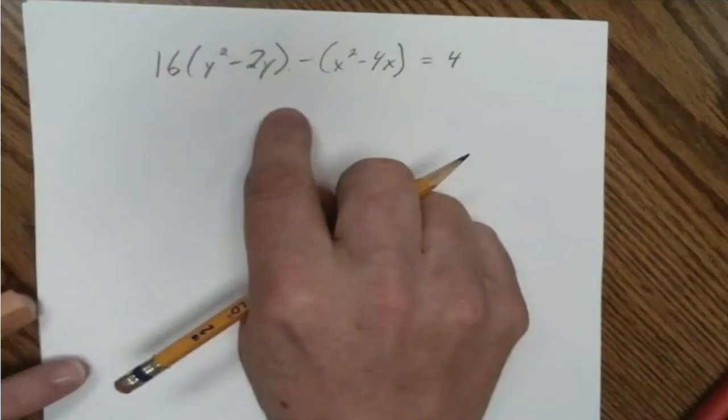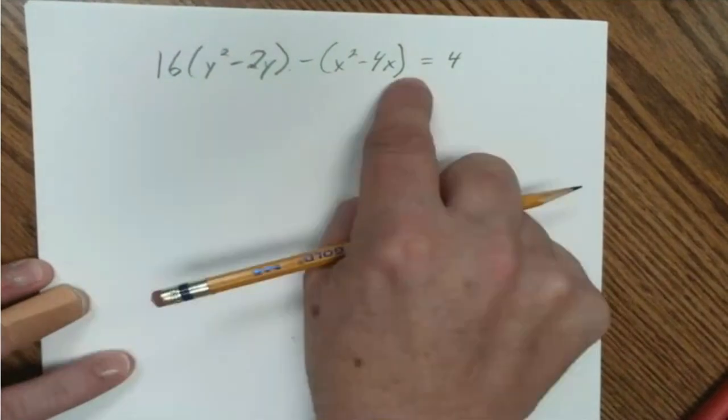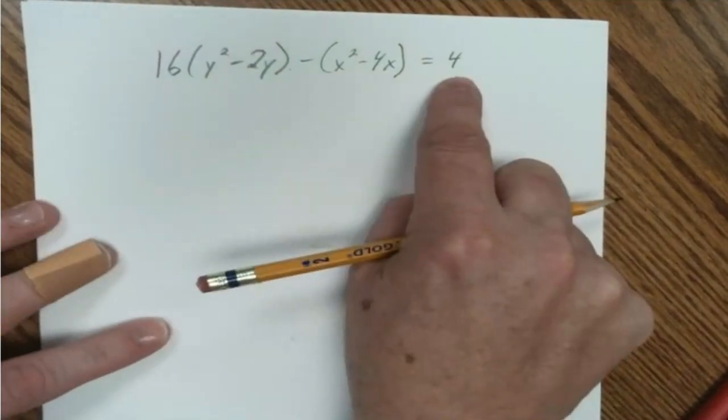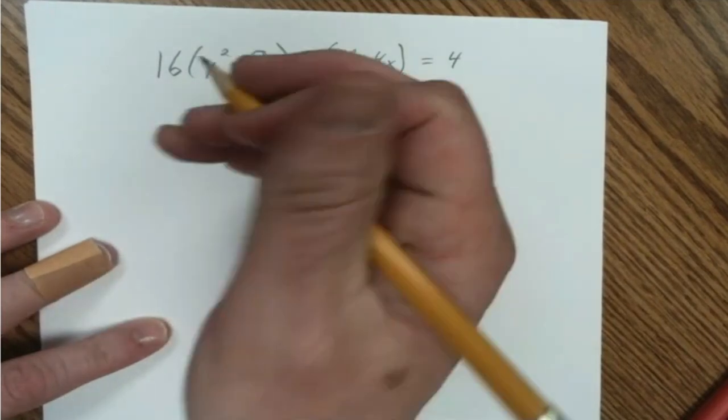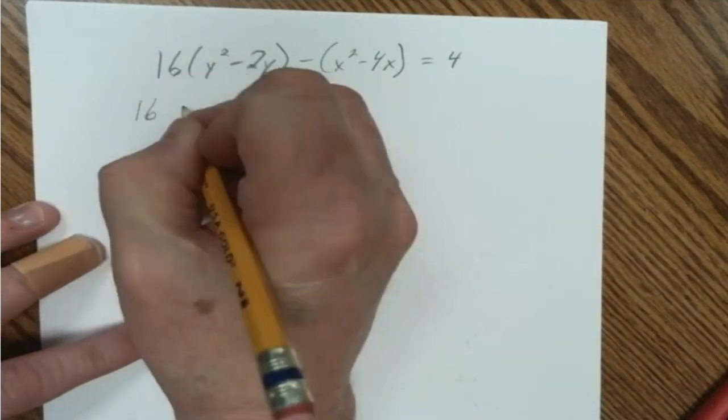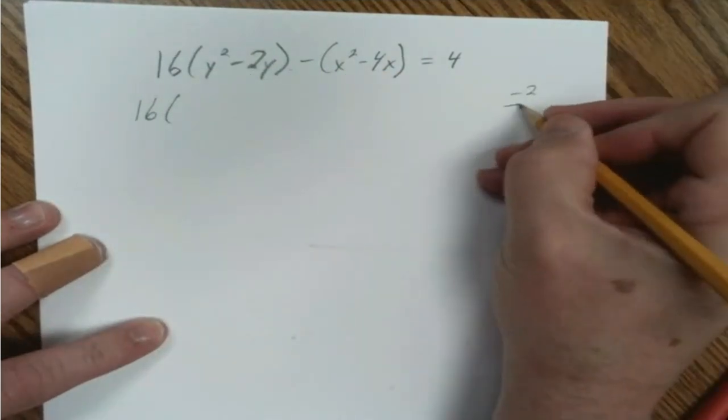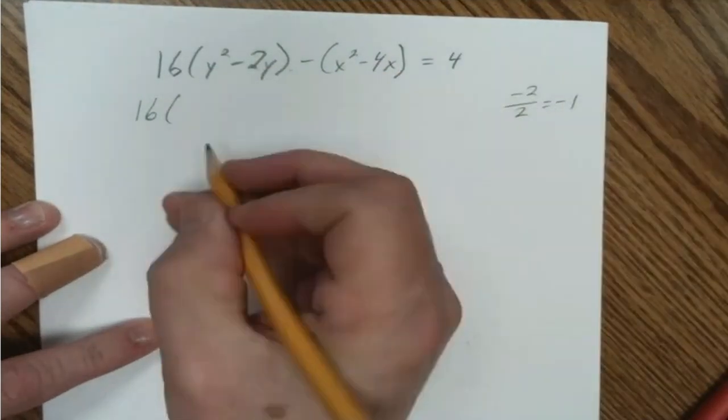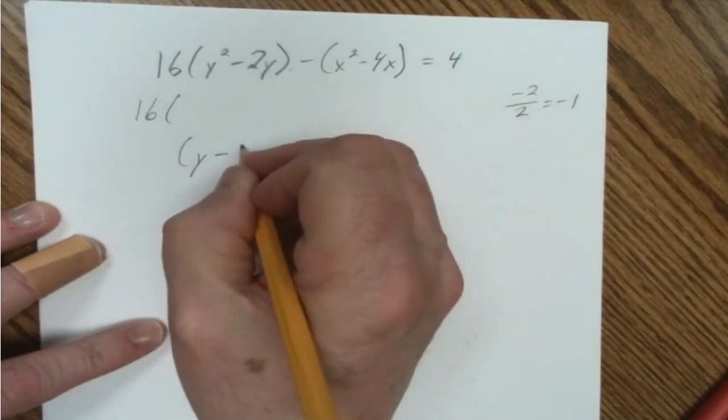Back up to this step where we had this right here. We had 16 factored out, the 4 is on the other side, it's a positive 4, and we were completing the square with these two terms. We did have properly taken the negative 2, dividing it by 2, and that's a negative 1, and that will end up being the term that we have down here.